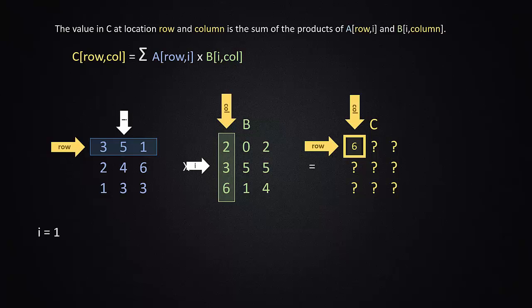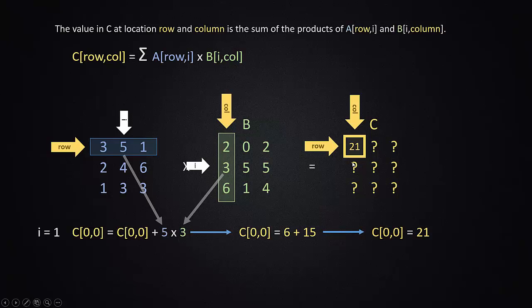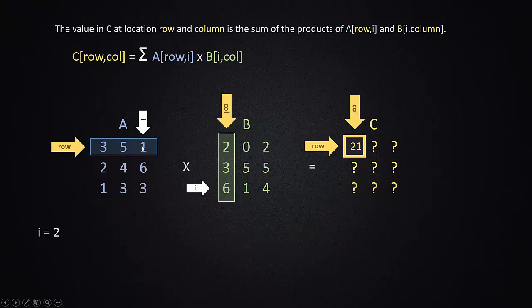Now we increment i by 1, so our pointers as to where we are in our row and where we are in our column advance by 1 because the value i has gone up by 1. And now we do the exact same thing over again and say that this value is going to equal its current value plus 5 times 3. And its current value is 6 and 5 times 3 is 15, so its new value will be 21. And then we will increment i by 1 again, and we will now be taking 1 times 6, adding it to the current value. Current value is 21 plus 6 means that the value of that particular one is 27. And we have now traversed all the way across the row and all the way down the column, which means we are done. So that value is actually 27 and we can advance to the next column.